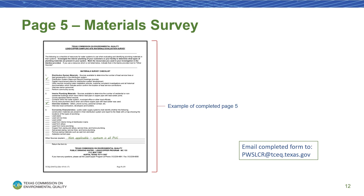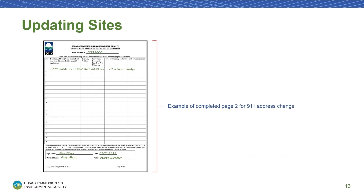Whether you submit the form via email or traditional mail, once a site is approved, it'll stay on file as an approved sample site. There is no need to seek re-approval for an already existing approved sample site. However, you may need to update some sites that you've historically used to include missing tier information. To do this, you'll fill the form out exactly as you would to add a new site as instructed earlier in this video. It's important to note that sites cannot be updated to a different address unless there has been a 911 address change. This is because once a sample site ID has been assigned to an address, data for that location is tied to that ID.